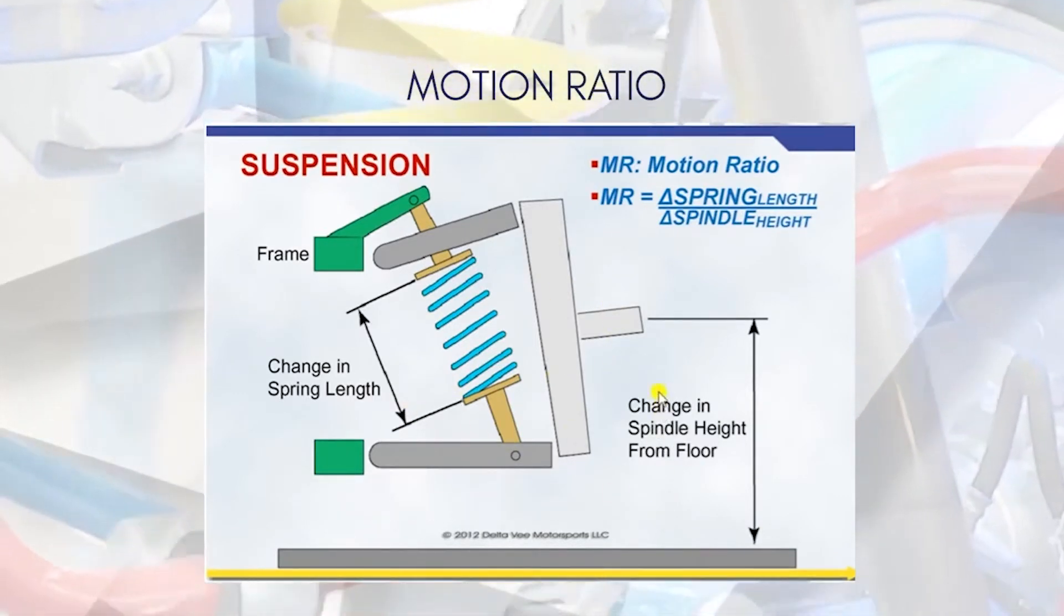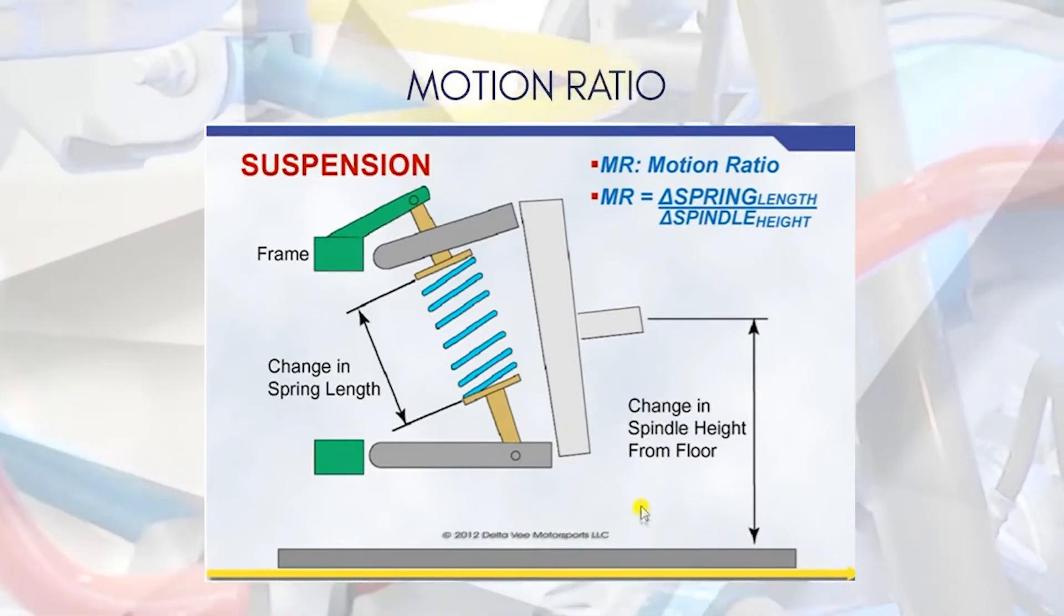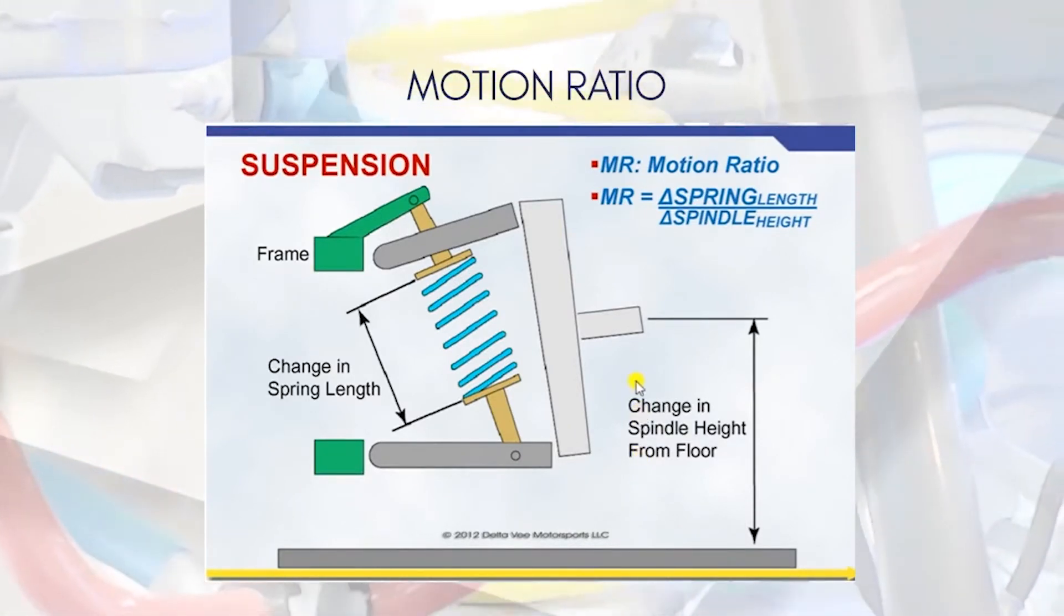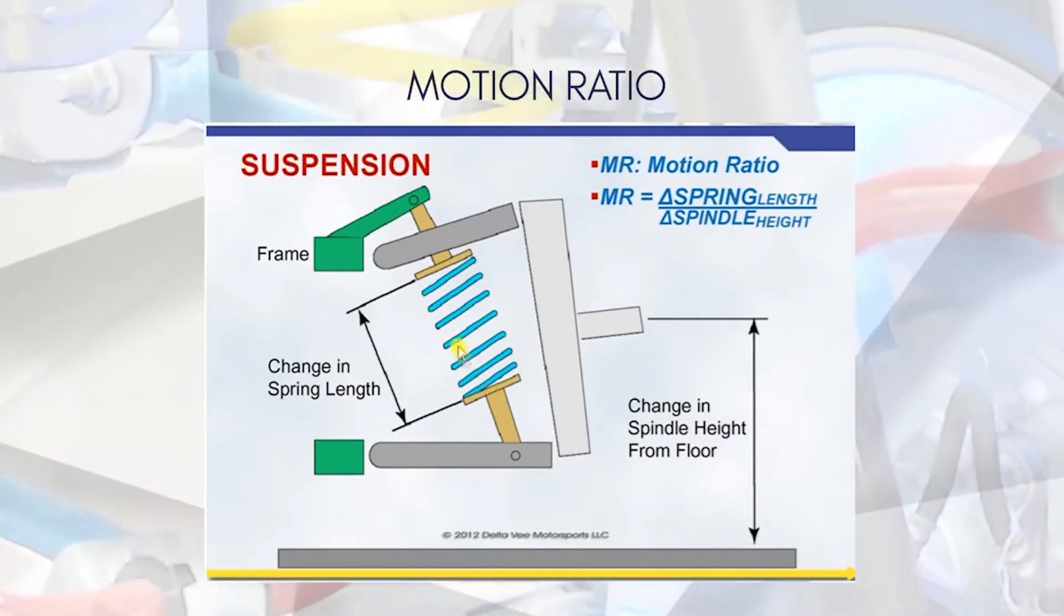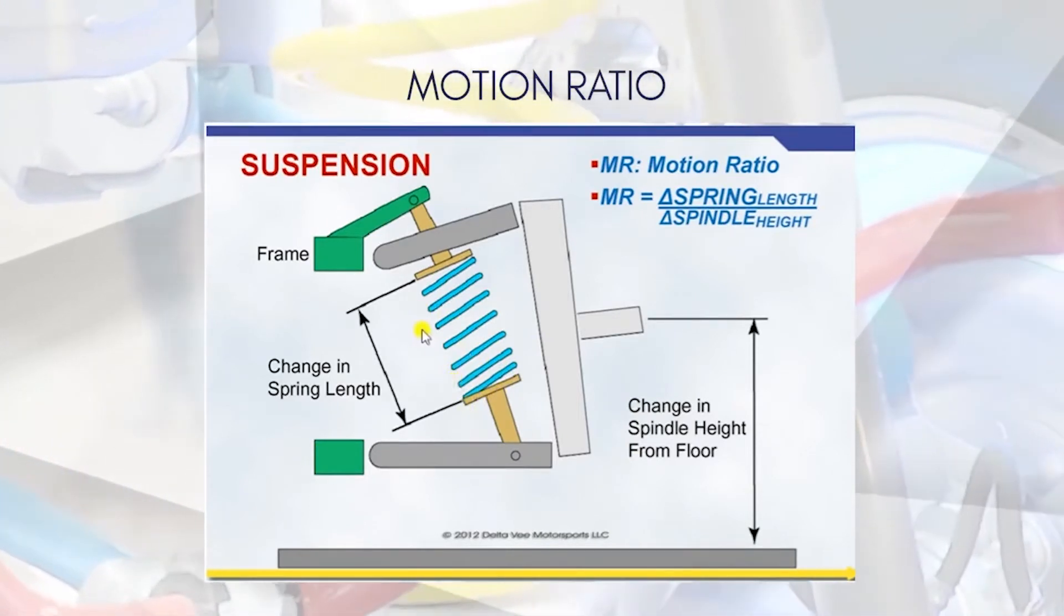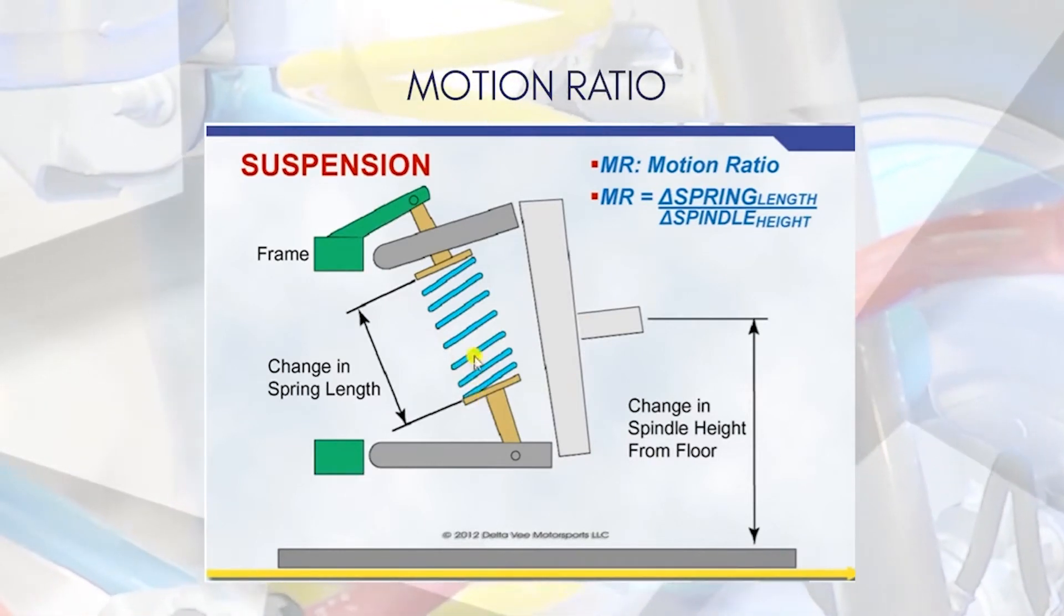If there is a wheel here and it goes along a speed breaker, for every one millimeter of your wheel movement in the upward direction, how much of the compression is there on the spring? That is the motion ratio.